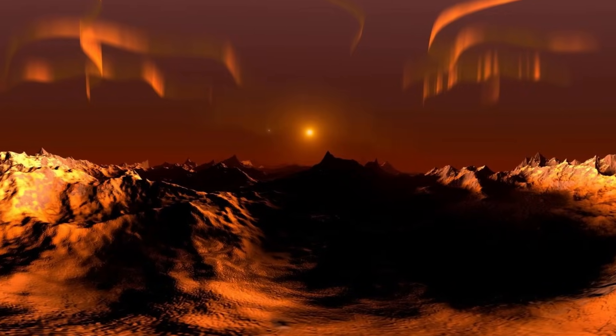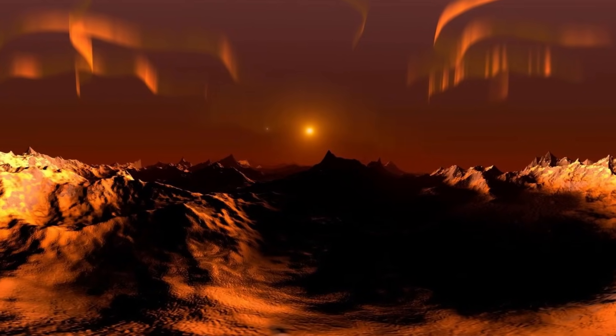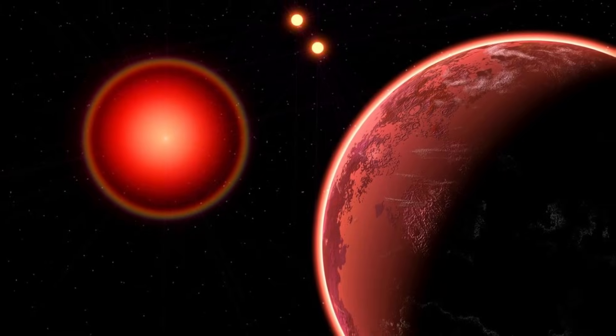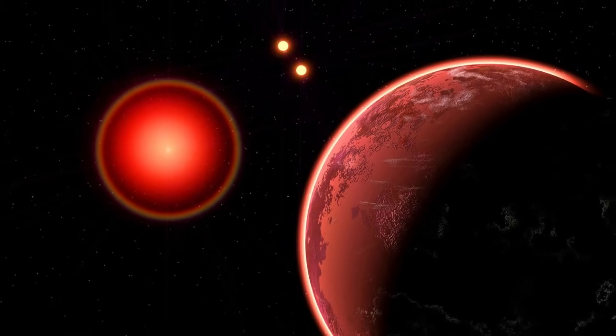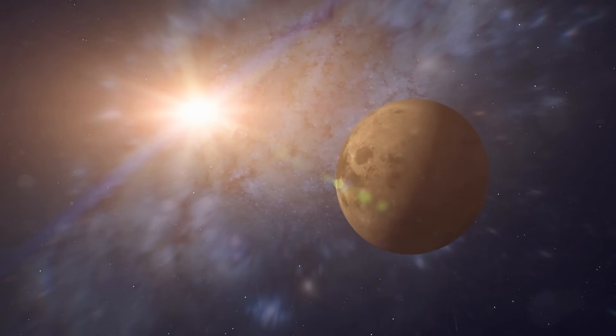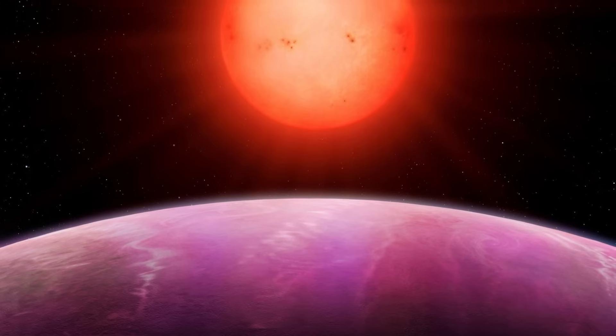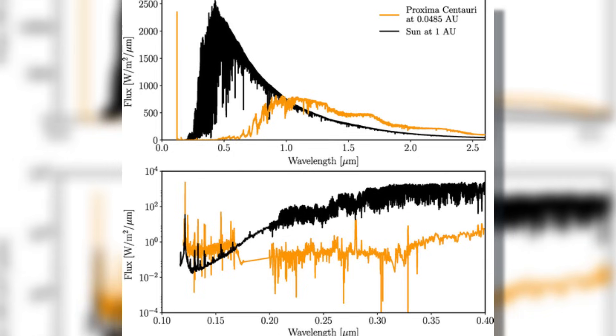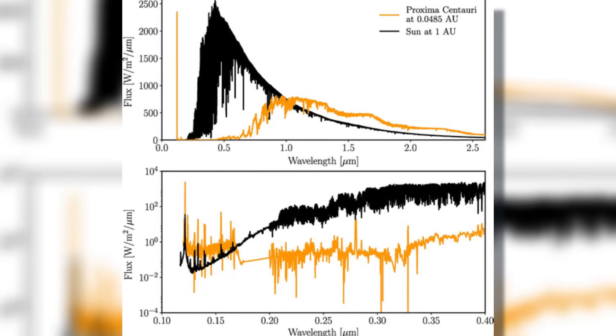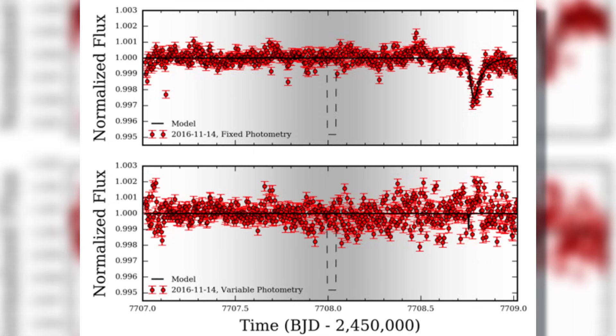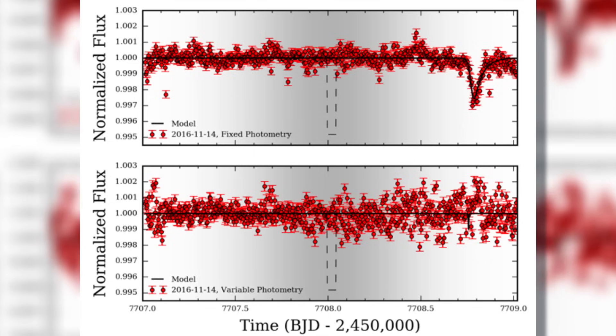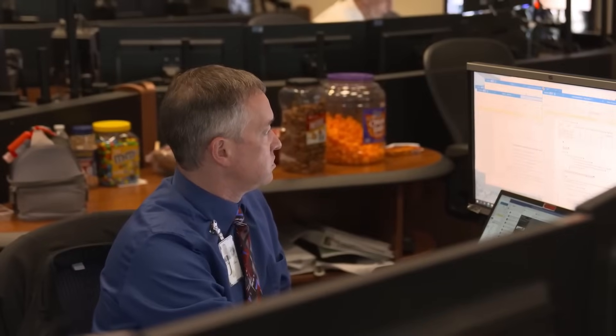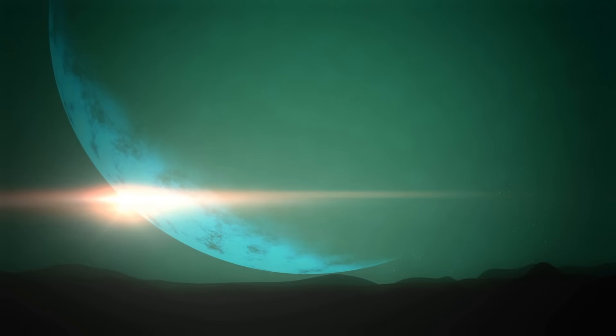Studying Proxima B presents several challenges due to its relatively small size and the bright glare of its parent star. It is difficult to image the exoplanet directly, and observations often rely on detecting its effects on the parent star's light or studying its atmosphere using spectroscopy. Through techniques such as the transit method and spectroscopy, scientists have meticulously pieced together a portrait of this distant world.